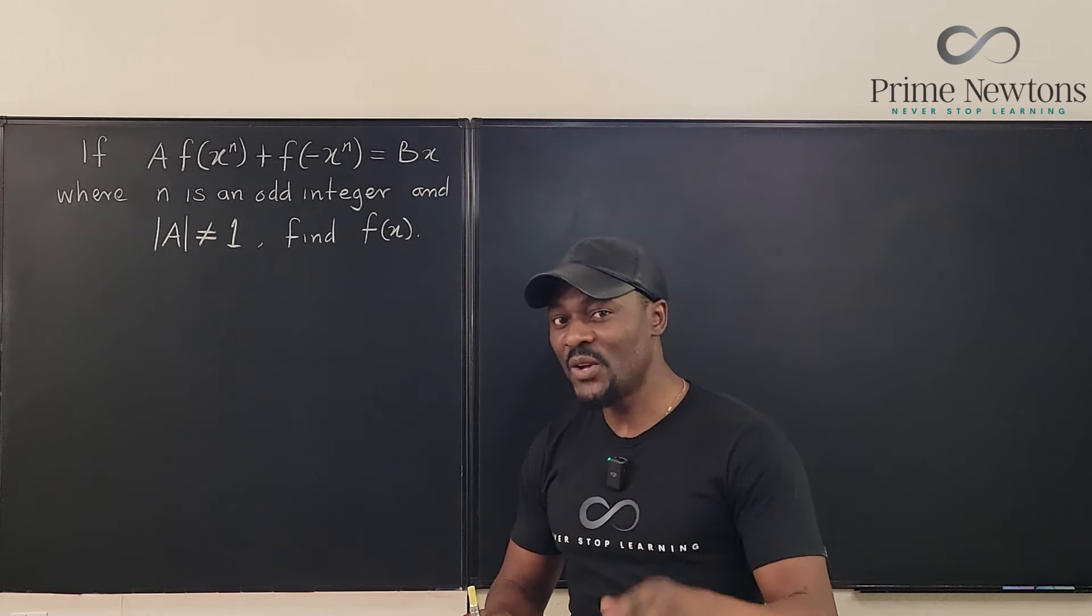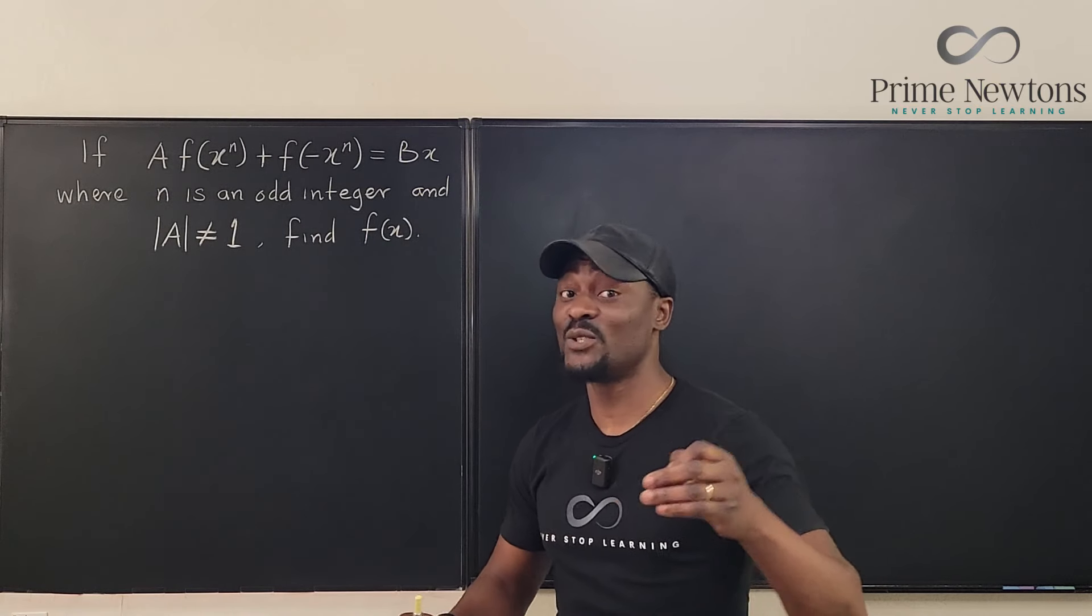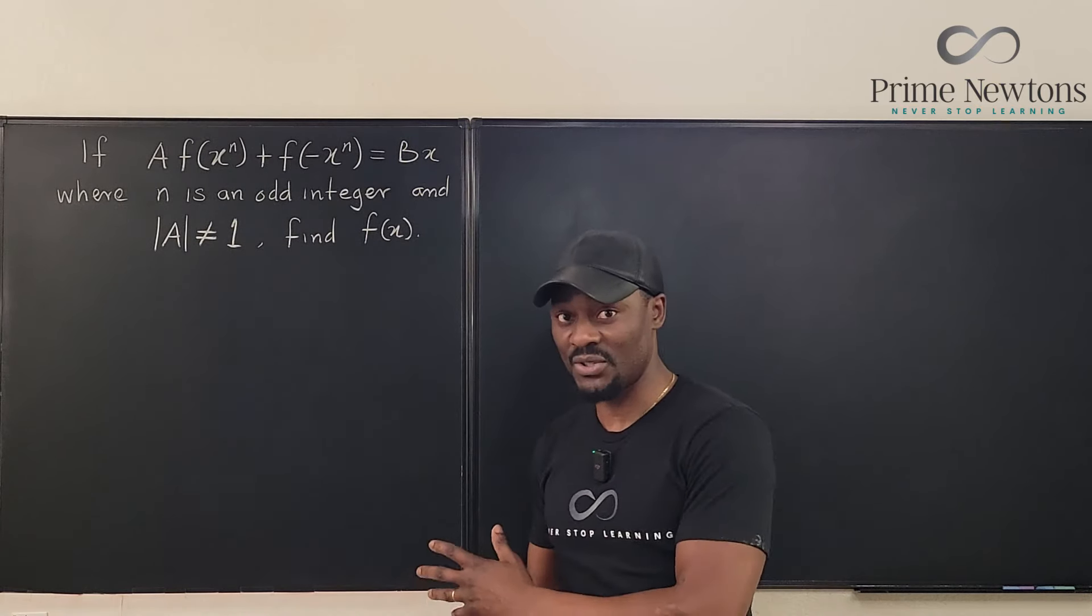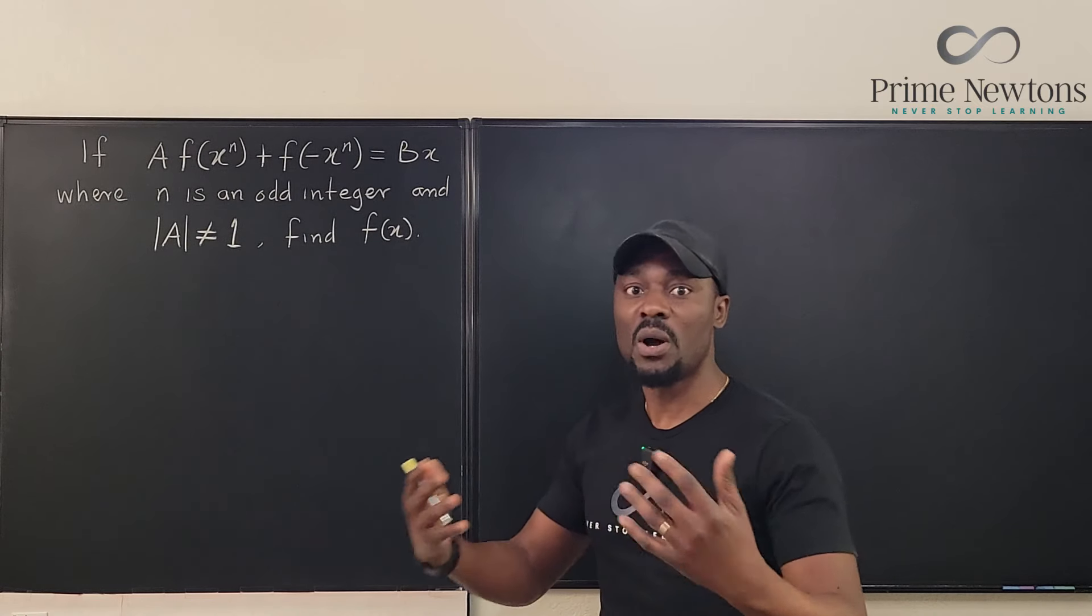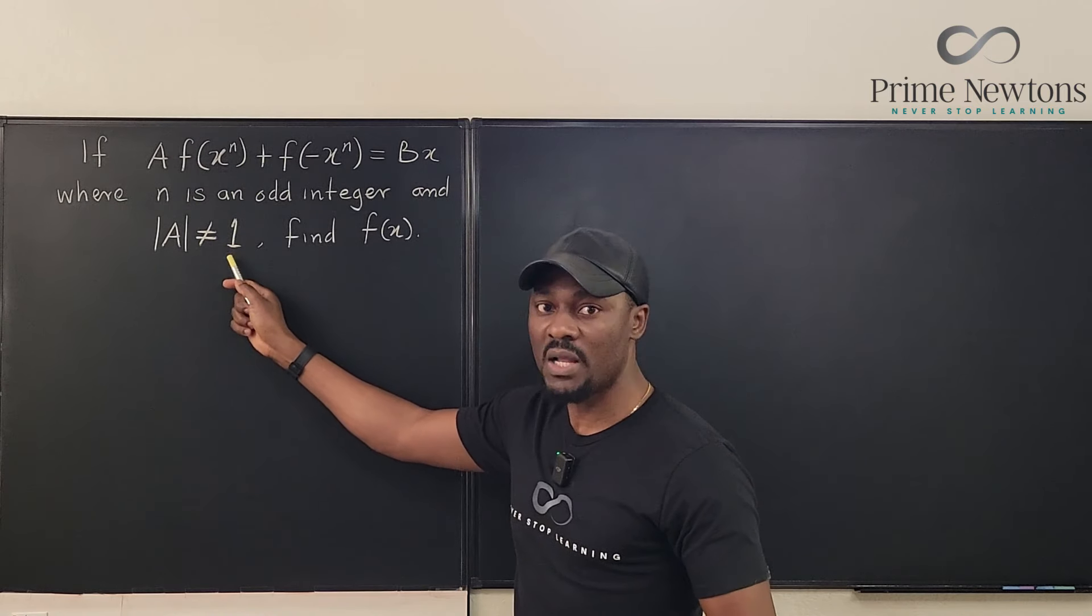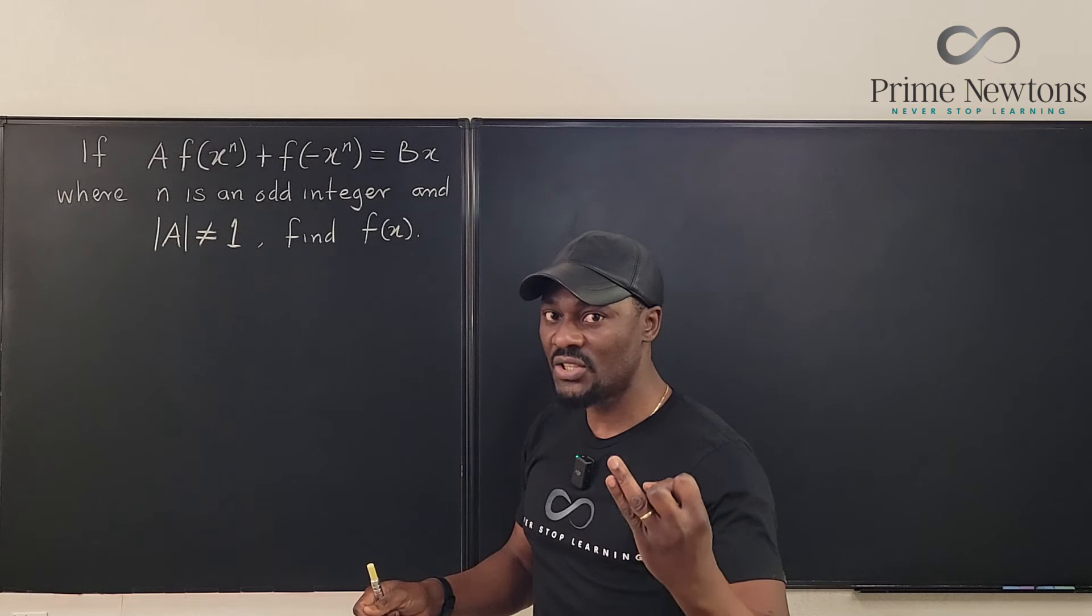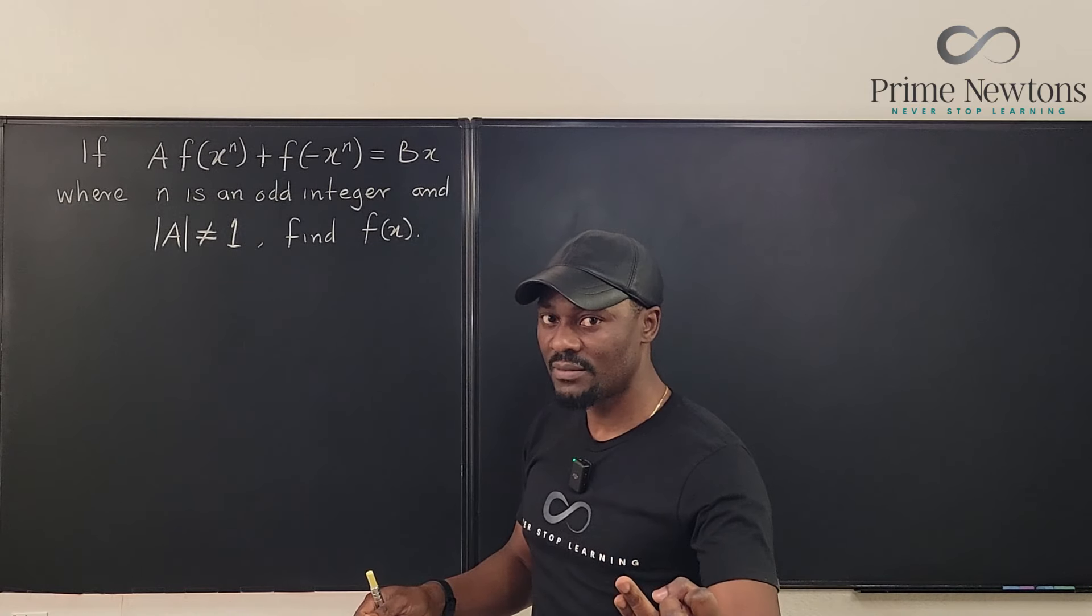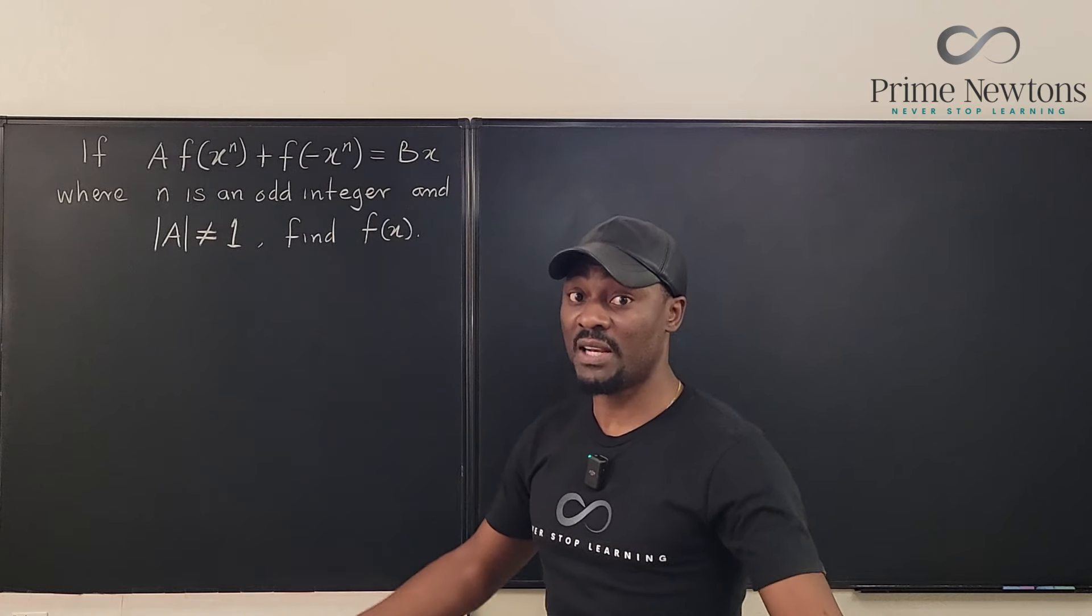Every single piece of information provided is relevant to solving this functional equation. Let's start with the most obvious. The absolute value of A not equal to 1 means that A is not 1 and A is not minus 1. You have to leave out those two values as possible values of A.